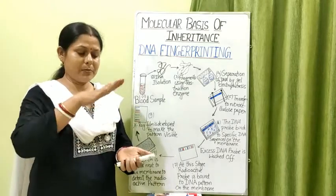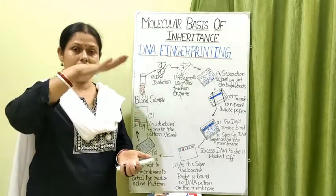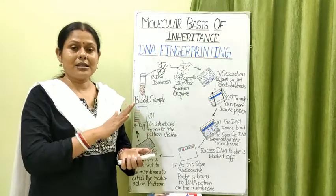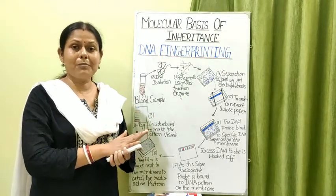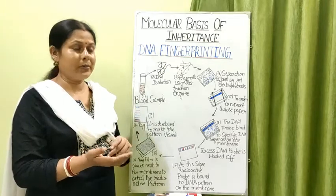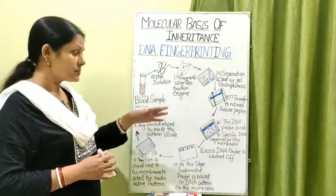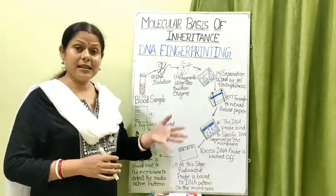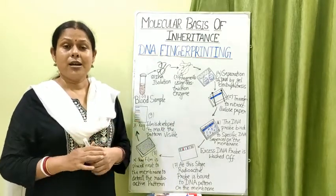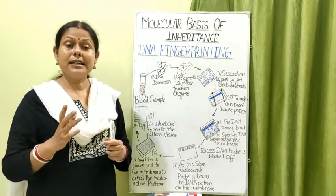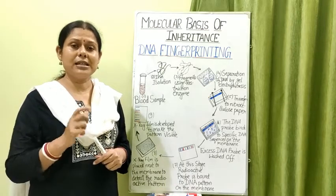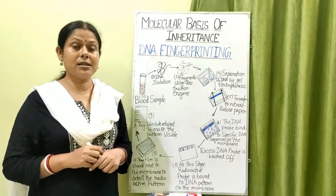After gel electrophoresis, the agarose gel is transferred to a nitrocellulose paper or nylon paper. A heap of nitrocellulose paper is kept on the agarose gel so the DNA pattern gets imprinted onto it. Next, in the lab, a DNA probe is prepared with respect to the VNTRs — Variable Number of Tandem Repeats.